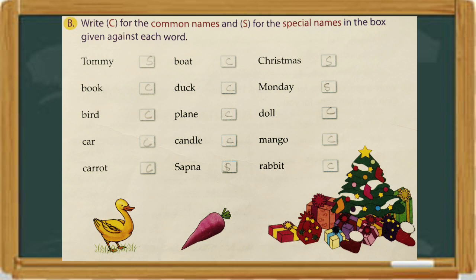Book — book doesn't start with a capital letter, so book is a common name. Bird is a common name. Car is a common name, so you have to write C. Carrot is also a common name, write C. Boat is also a common name, write C. Duck is a common name, write C. Plain — common name. Candle — common name. Sapna is a special name of a girl, so you will have to write S, because it starts with a capital letter.